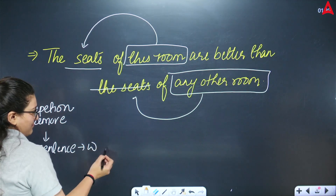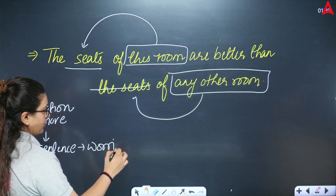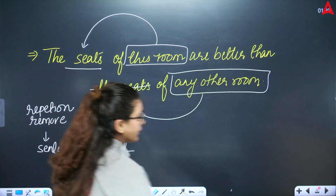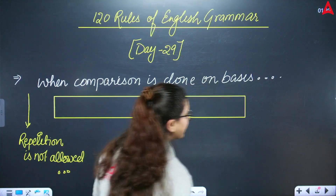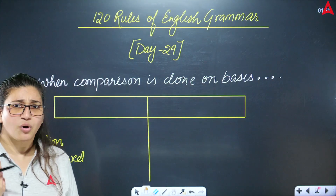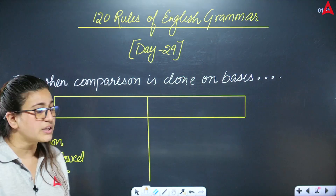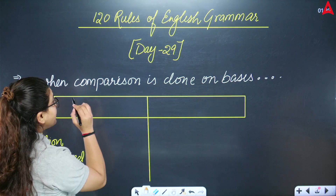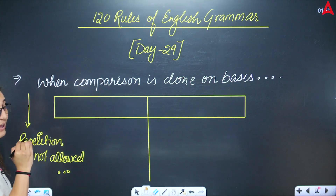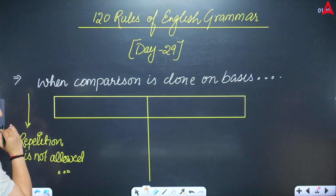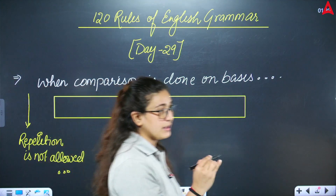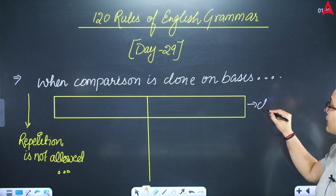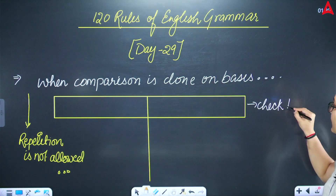You might be worried, but you don't need to be worried about this rule. What happens here is that the sentence is weird or strange because we can't simply compare 'the seats' to 'the room.' So what do you do? You check the sentence — you check the basis.